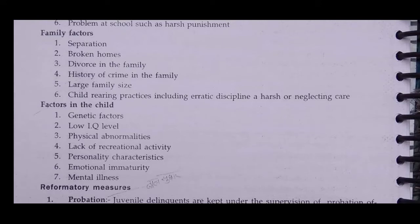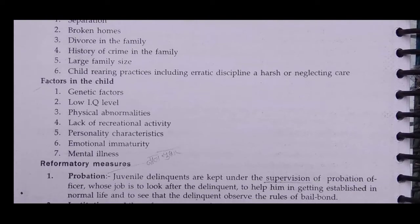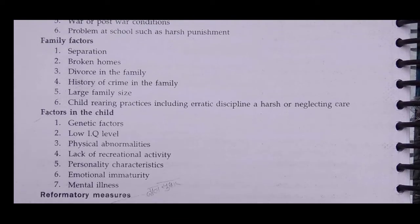Under family factors: separation, broken homes, divorce in the family, history of crime in the family, large family size, child rearing practices including erratic discipline, and harsh or neglecting care. If parents have a separation, break-up, broken family, or divorce, or if family members have a history of crime, then the child will not receive proper nurture and care. If children grow up around crime in the family, they can repeat that behavior.